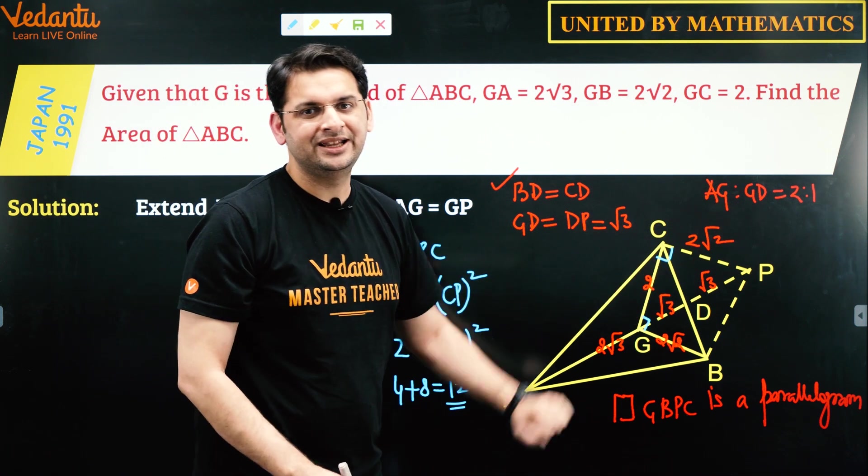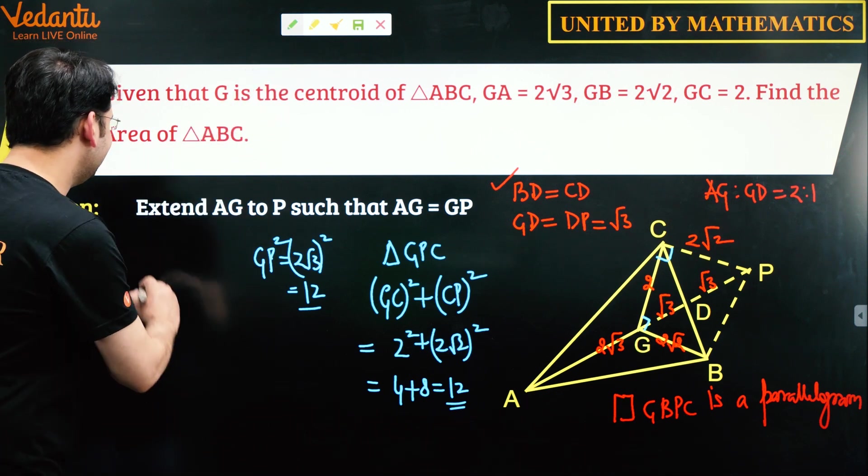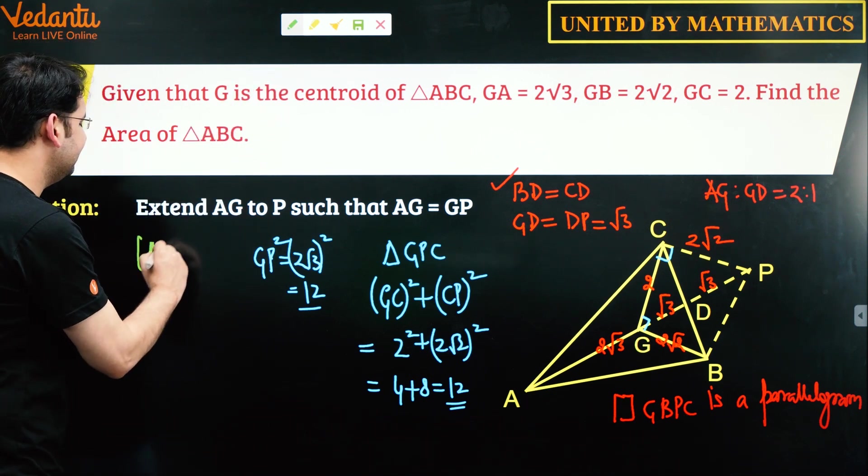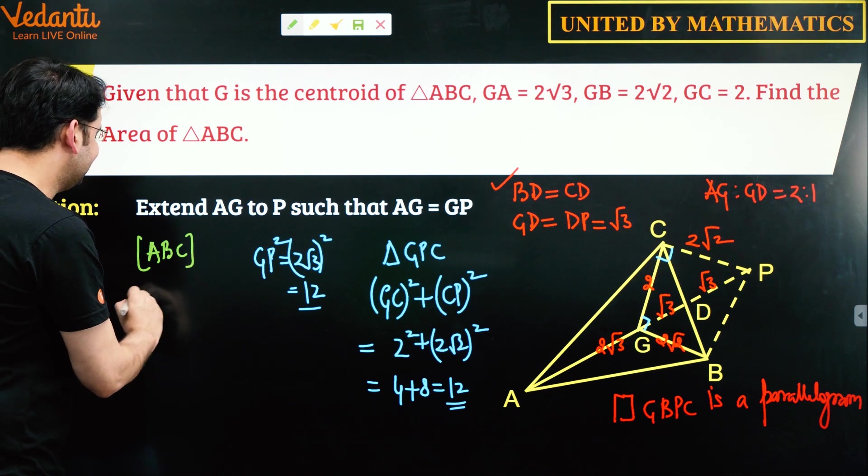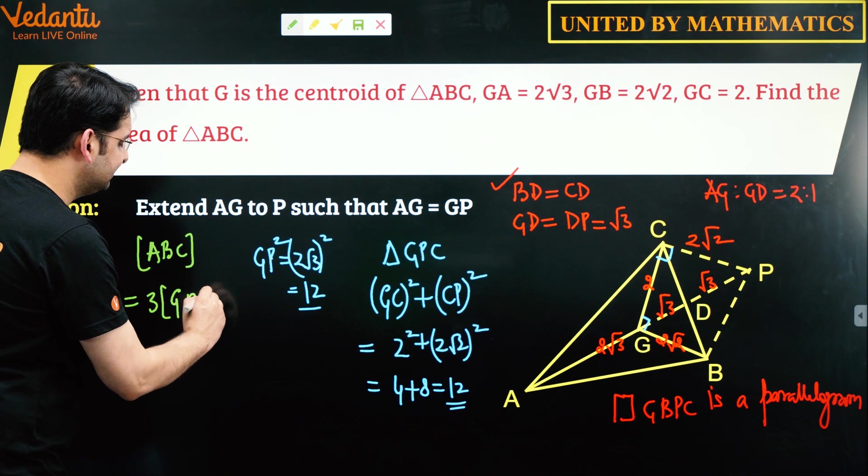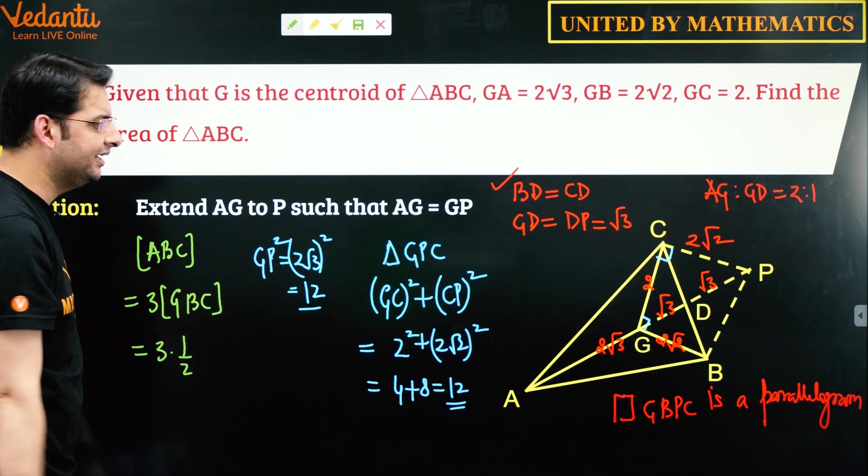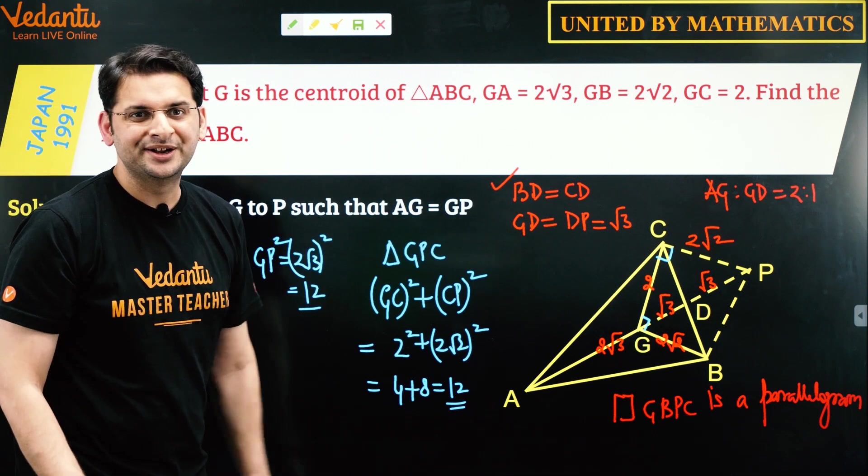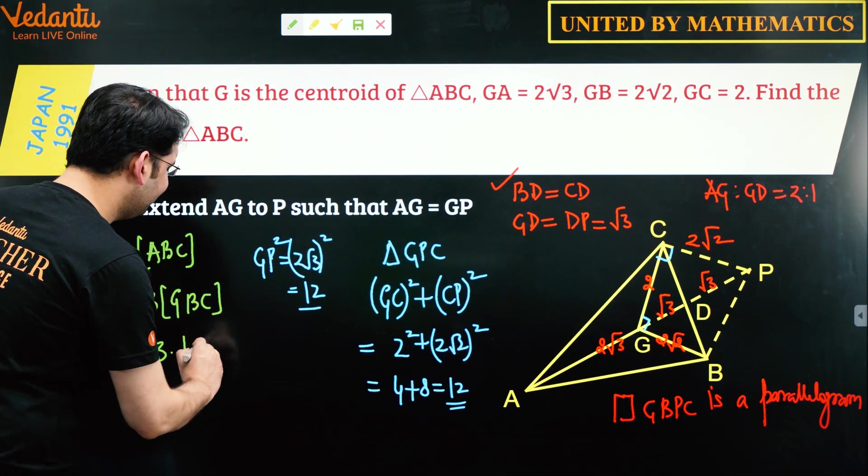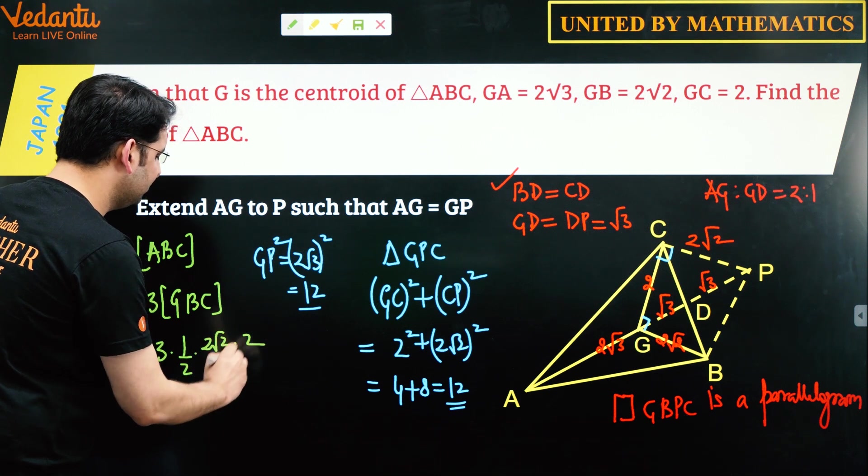And if we need to calculate the area of the triangle, it is very obvious that the area of triangle ABC will be three times the area of any one of the triangles. So let's say we consider triangle GBC, and since this is a right angle triangle we can easily find the area using the formula half base times height. So half into base we can take 2√2 and height will obviously be 2.